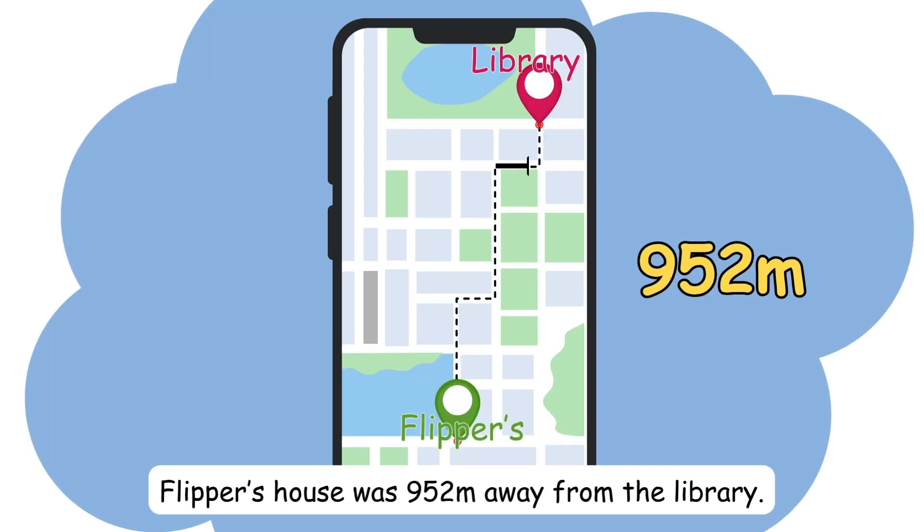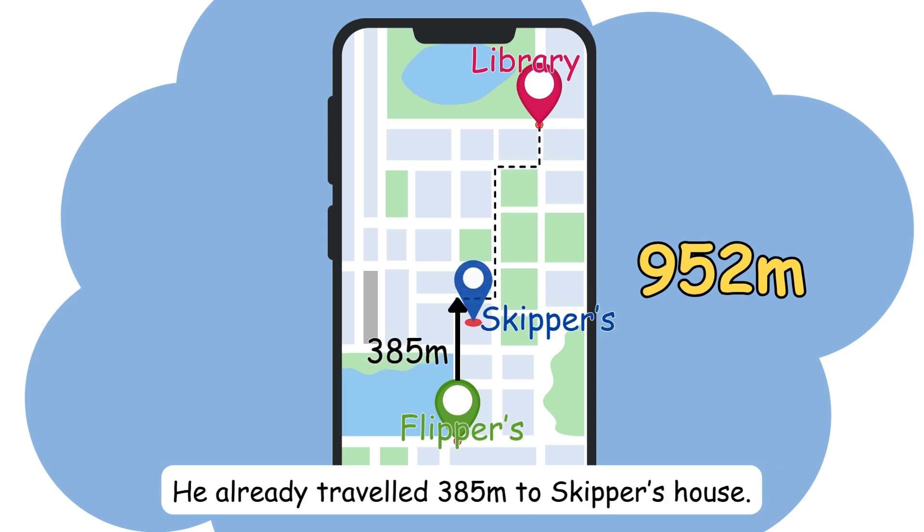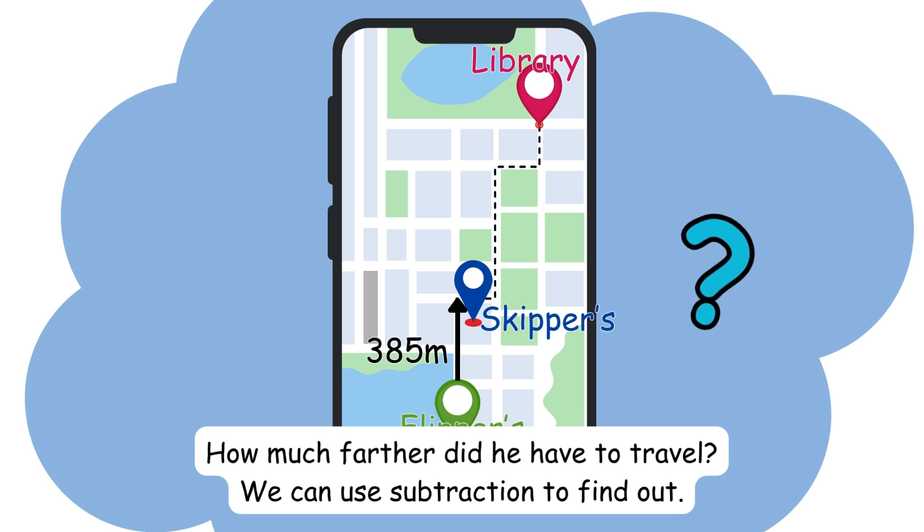Flipper's house was 952 meters away from the library. He already traveled 385 meters to Skipper's house. How much further do you have to travel? We can use subtraction to find out.